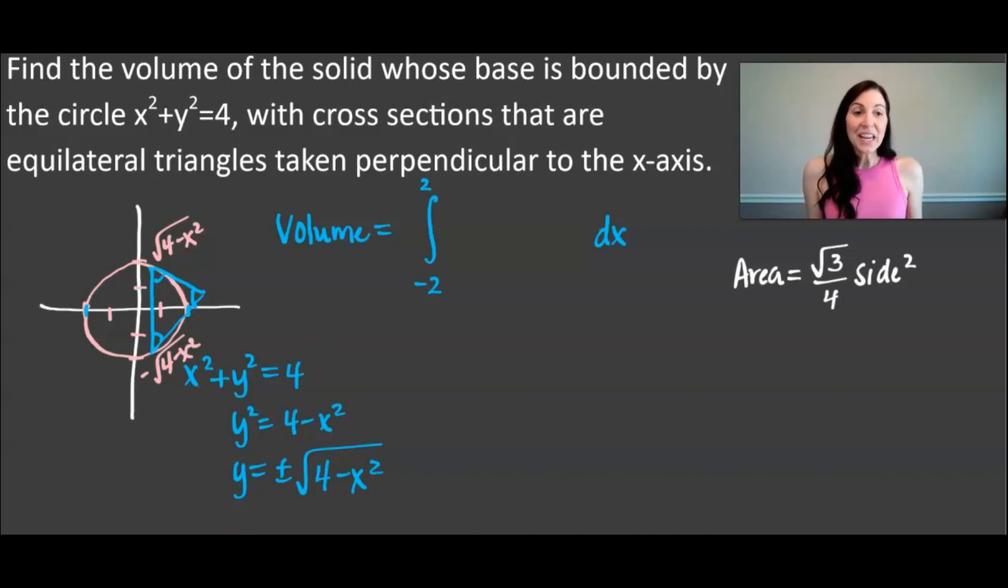So what we need to do here is we need to figure out well what is one side? What is one length of one of the sides of this equilateral triangle? Well to find the length of this side here what you need to do is you need to take the top function minus the bottom function. That's one way of thinking about it. Or you can take this half and you can just double it. Either way what you will get for one side is going to be 2 times the square root of 4 minus x squared. Now what I just put after my integral is just that part right there.